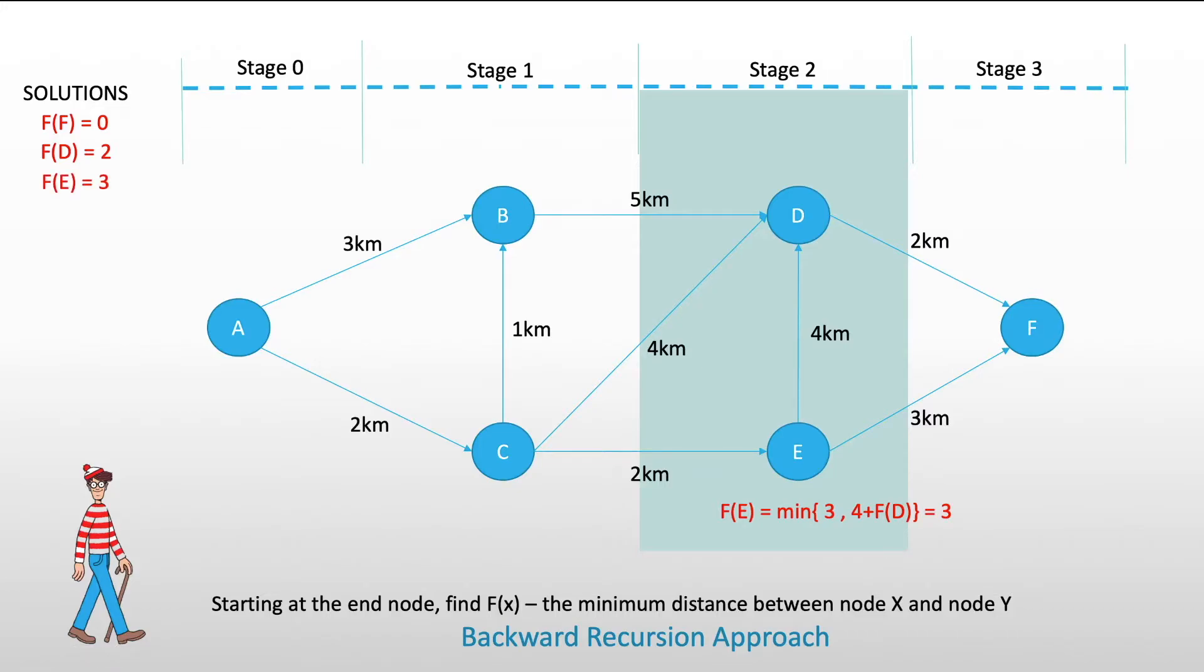Now, we move to stage 1. At stage 1, we will consider two nodes again. Let's start with node B. From node B, there is only one way to go to node F, and that is to pass by node D. Thus, we have to find the value of f of B, and that is 5 kilometers plus the value of f of D, which is equal to 7.